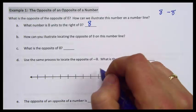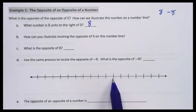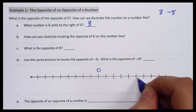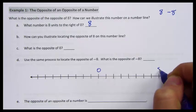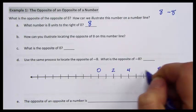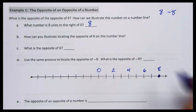On this number line, I'm going to put 0 right here, 1, 2, 3, 4, 5, 6, 7, 8. 8 is right there. So here is 8 on my number line.